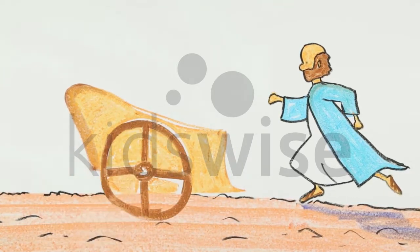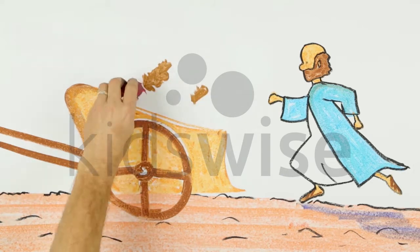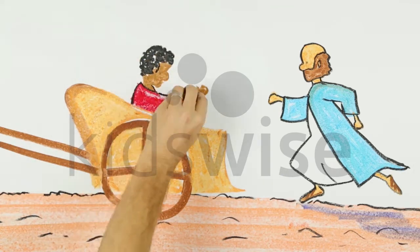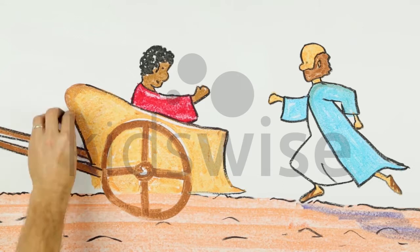The man was from a country far, far away called Ethiopia. He was an important official for the Queen of Ethiopia.